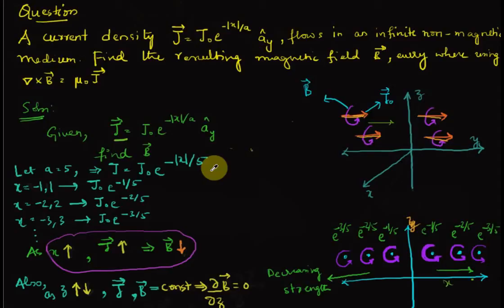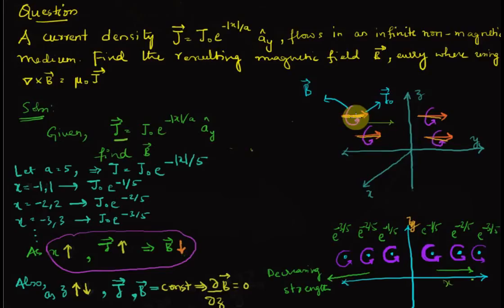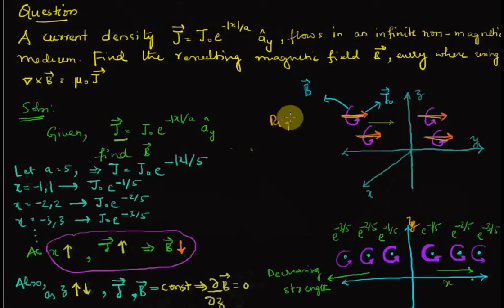Before we get into solving the problem, let us understand how the current density looks. If we plot the current density in the x-y-z plane, the current density is along the y direction as shown in the picture, and the direction of the magnetic flux density will be determined by the right-hand thumb rule.